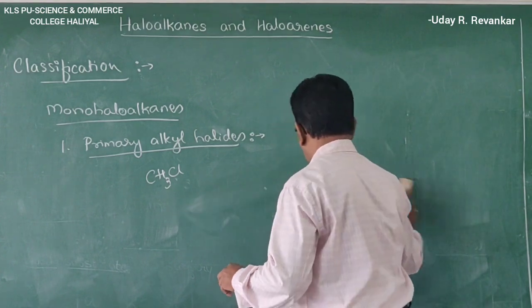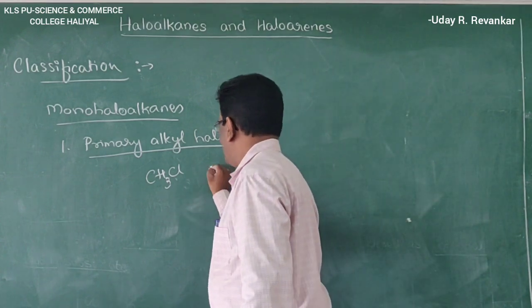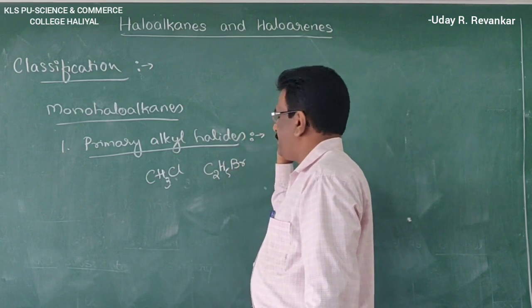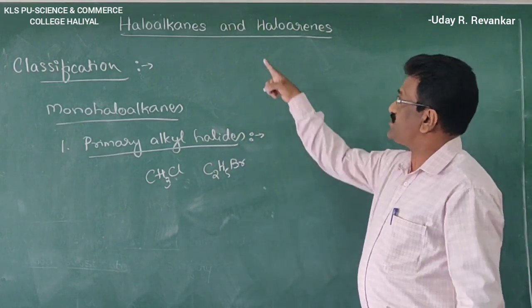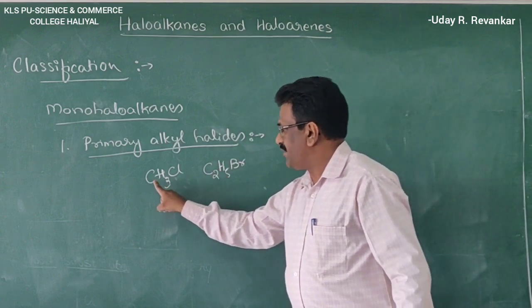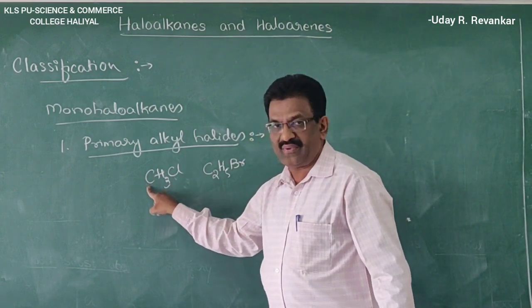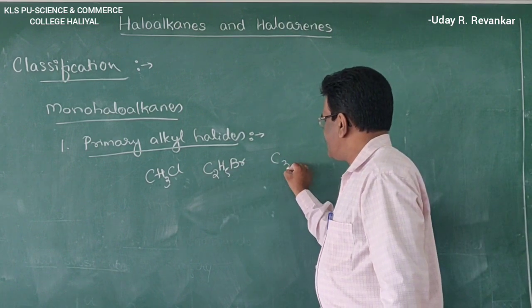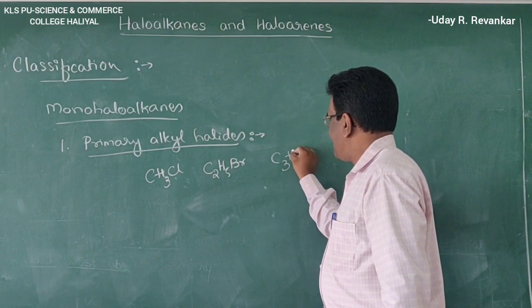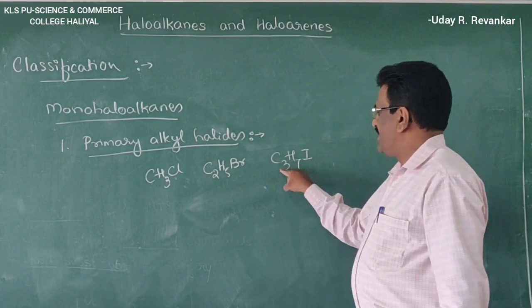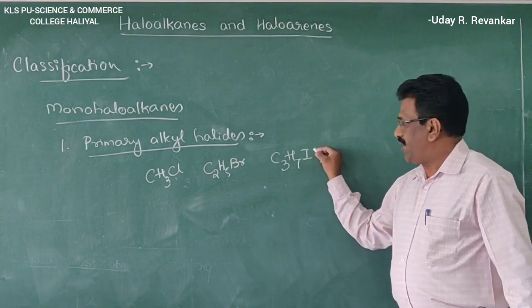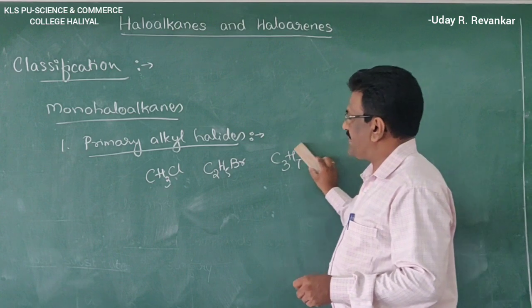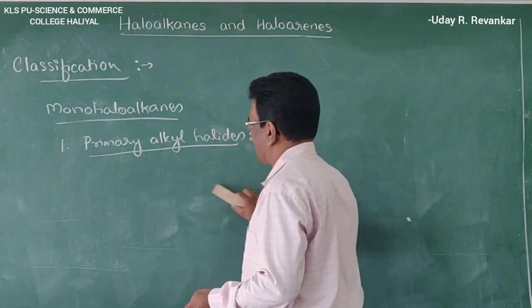Another example is ethyl bromide, C₂H₅Br, also called bromoethane. Methyl chloride is called chloromethane. C₃H₇I is propyl iodide or iodopropane. These are the examples of primary haloalkanes.